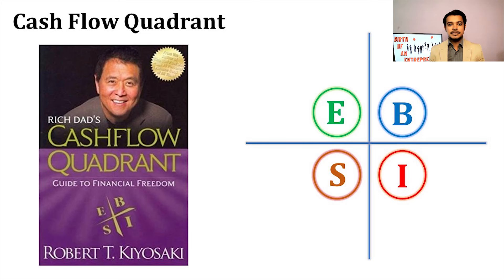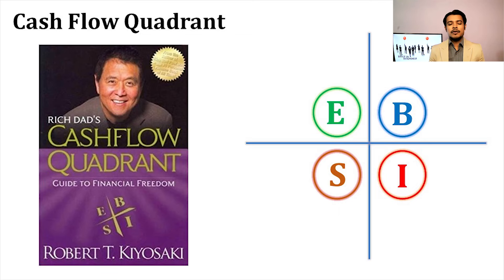E represents employees, S represents self-employees or small business owners, B represents big business owners, and I represents investors. Let's identify a few of the characteristics of the people who belong to each of these quadrants.